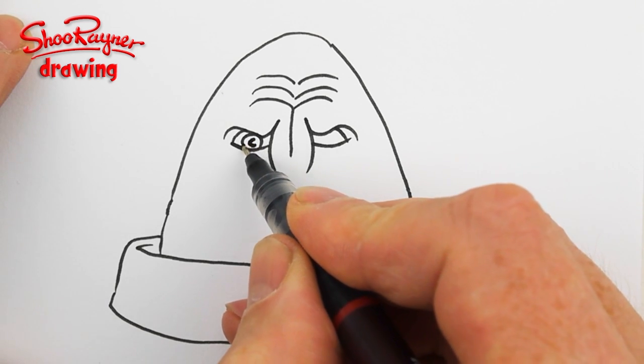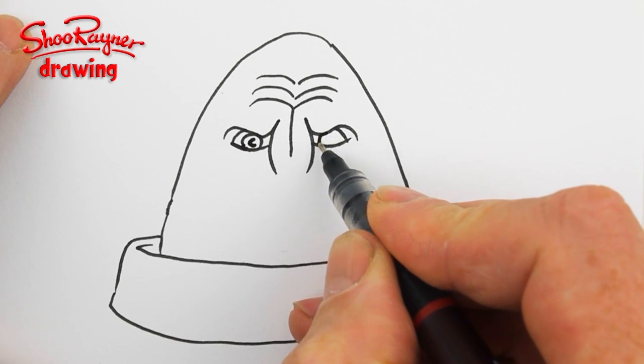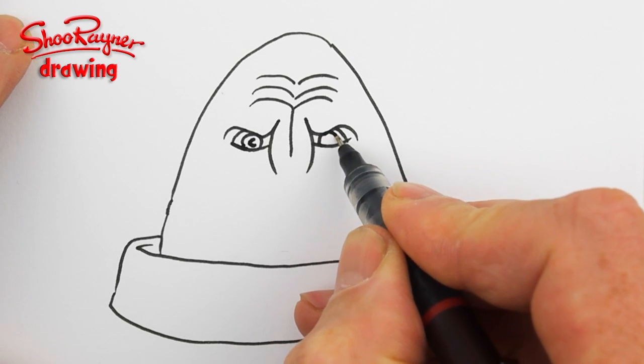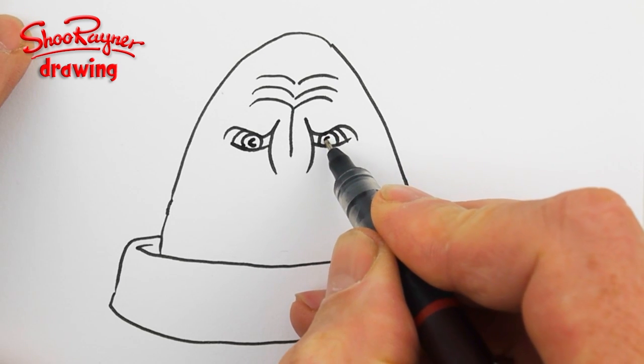Put the eyeballs in the middle with the pupils there, and I do the pupils usually like a letter C or a Pac-Man. The old Pac-Man, you remember Pac-Man? Is he still going? I don't know, I used to love Pac-Man.